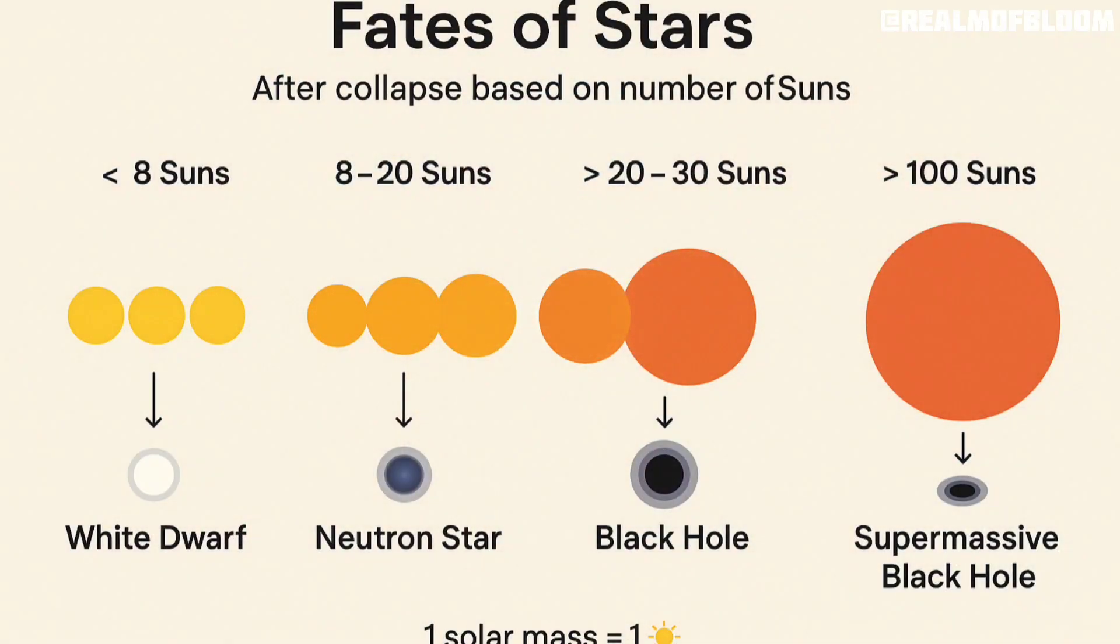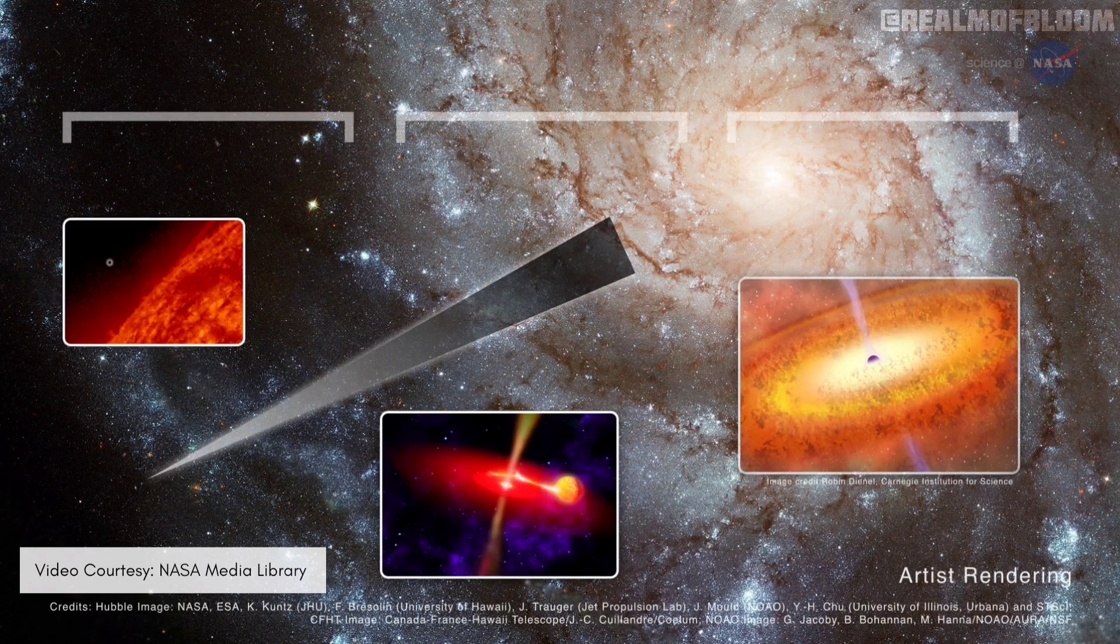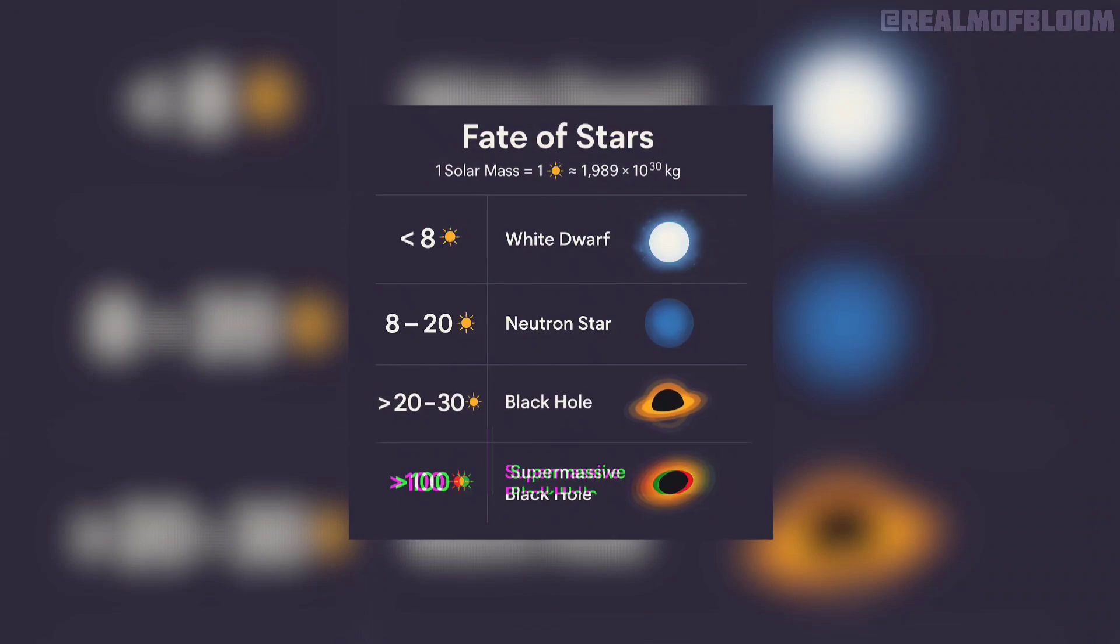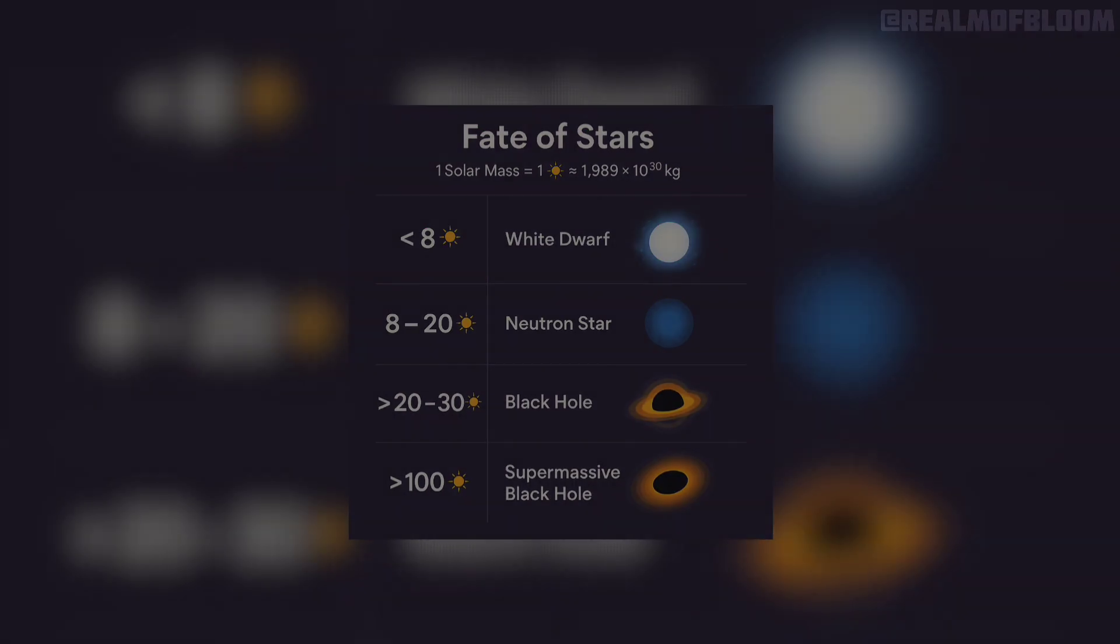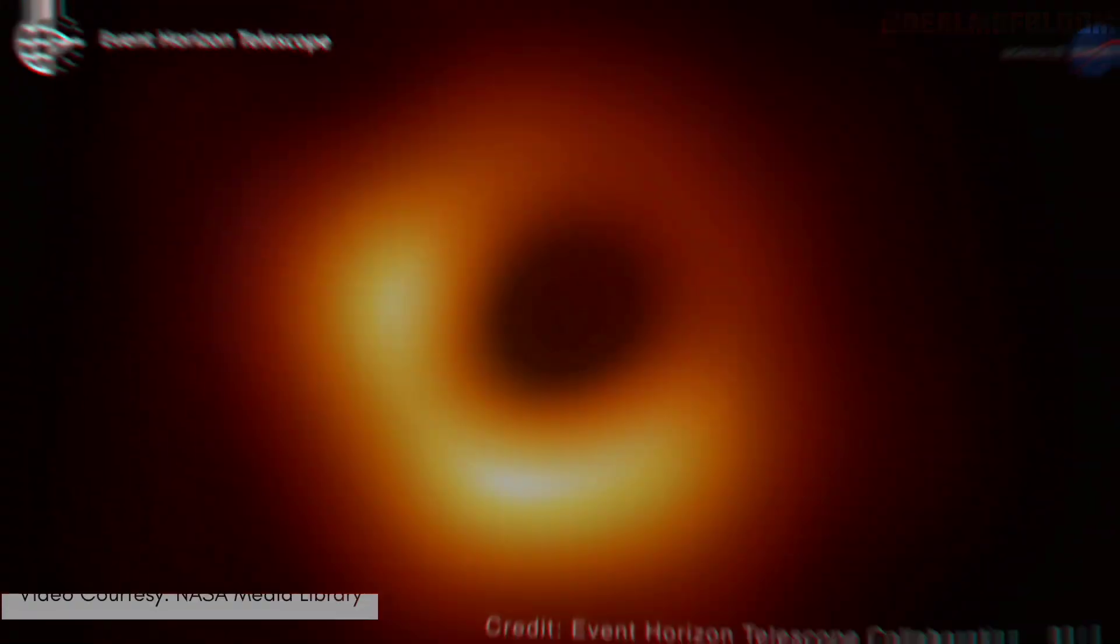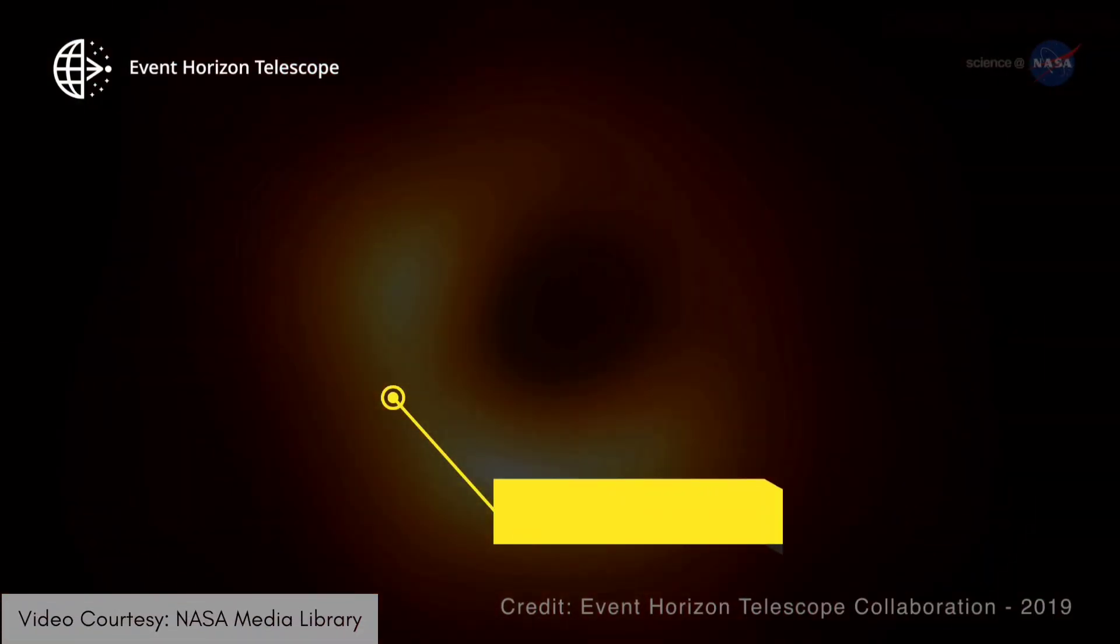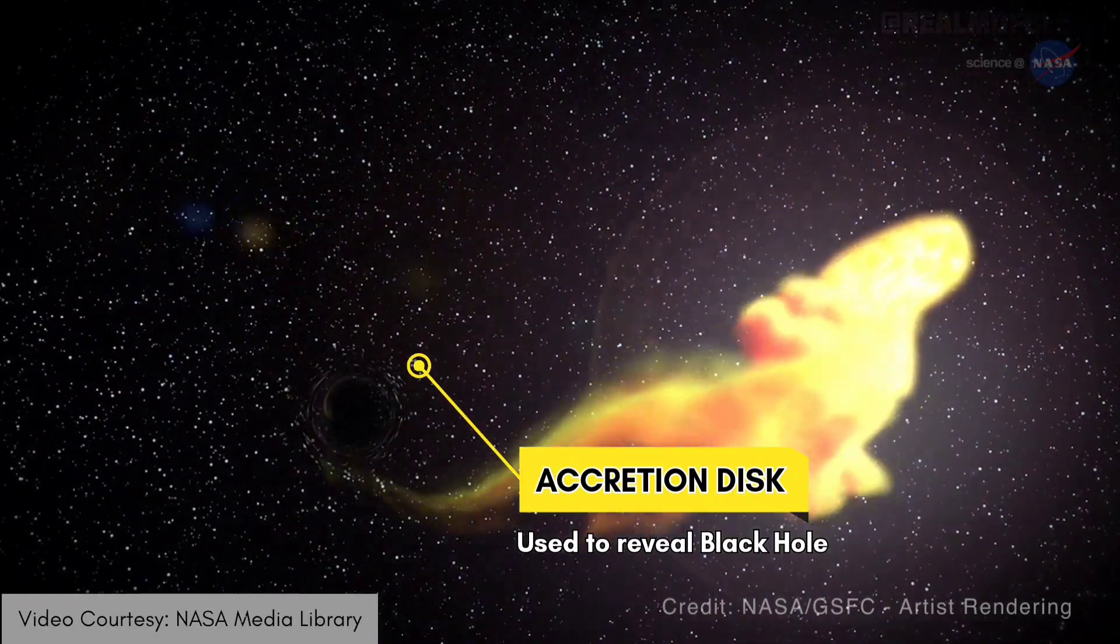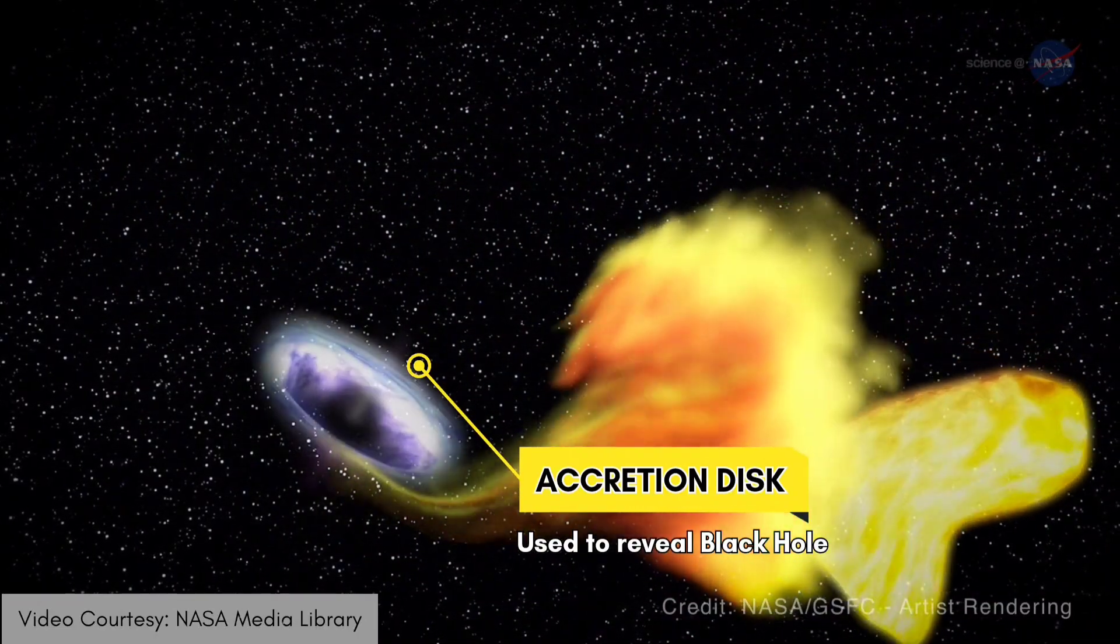After a supernova, a black hole is formed based on the mass of the star. An accretion disk is a disk of superheated gas, dust and matter that swirl around the black hole at very high speeds, producing electromagnetic radiation that is used to reveal the black hole location.